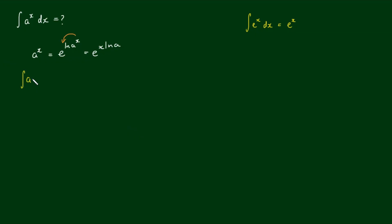So the integral of a to the power of x with respect to x is now equal to the integral of e to the power of x by the natural log of a with respect to x.